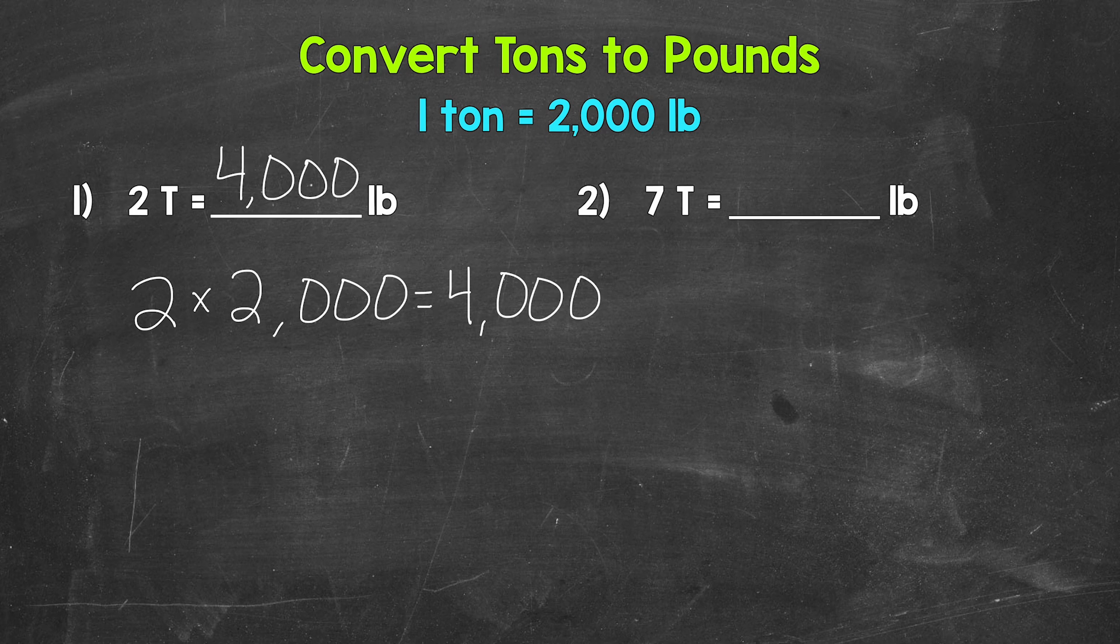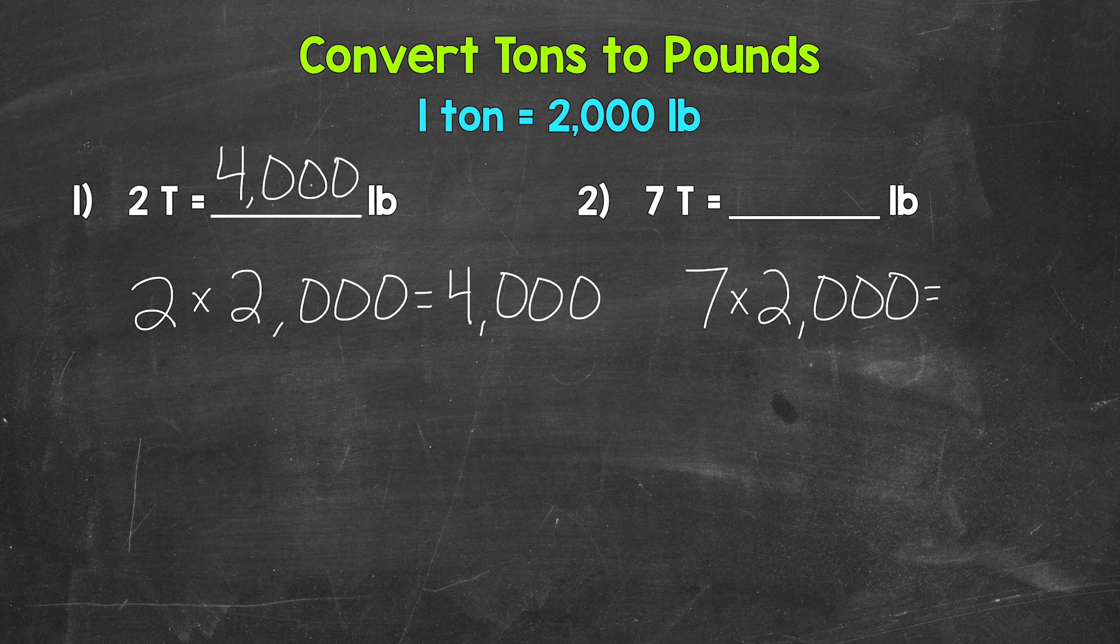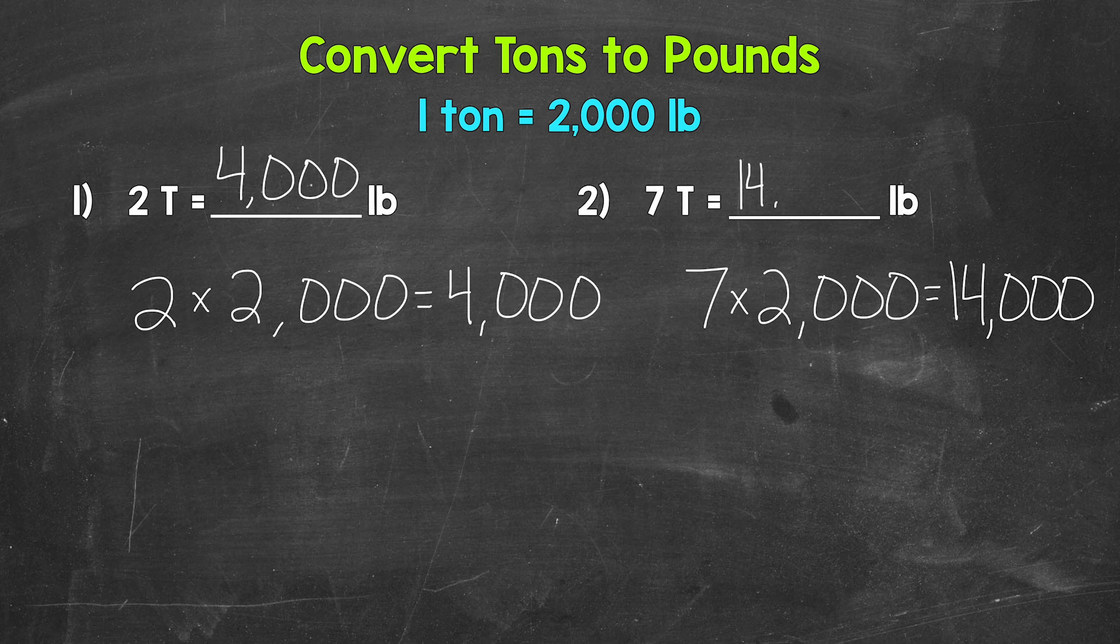Let's move on to number two, where we have seven tons equals how many pounds? Well, we have 2,000 pounds, 2,000 pounds, 2,000 pounds, seven times. So we need to do seven times 2,000. Seven times 2,000 gives us 14,000. Seven tons equals 14,000 pounds.